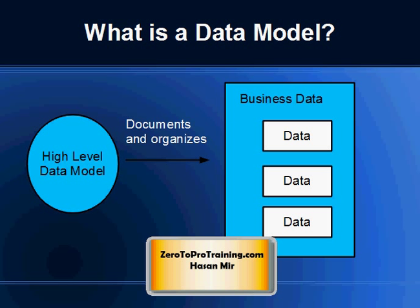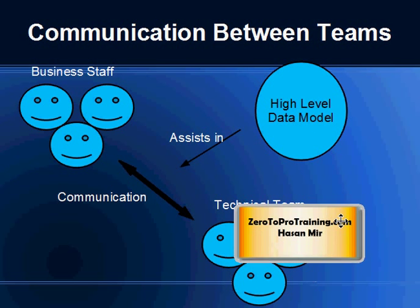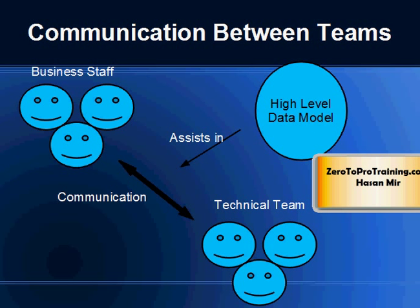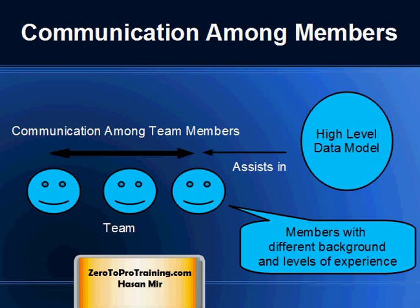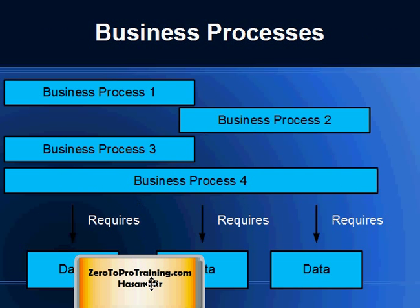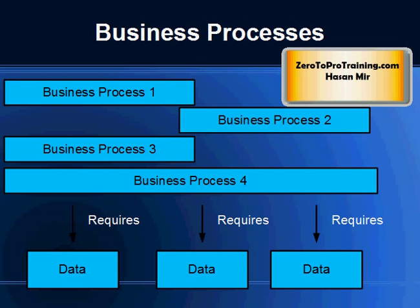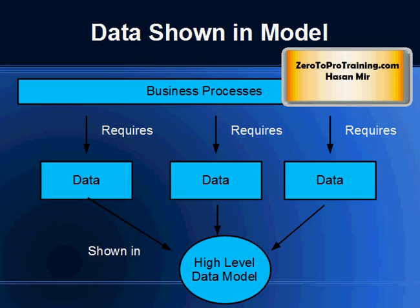What is a data model? A high-level data model in business or for any functional area is an abstract model that documents and organizes the business data. A data model facilitates communication between functional and technical people, as each member in a team comes with different backgrounds and different levels of experience. A data model also facilitates communication among team members. Data is used by the business in various business processes, and a data model documents and organizes such data that is needed in those business processes.